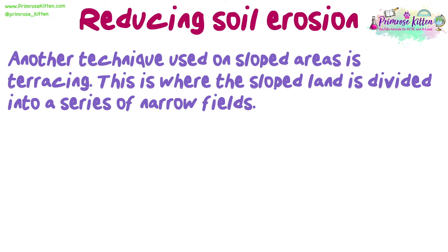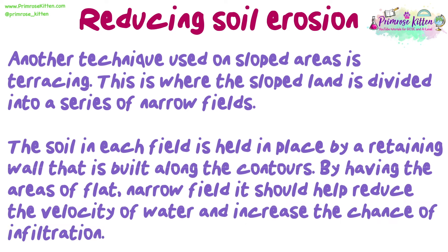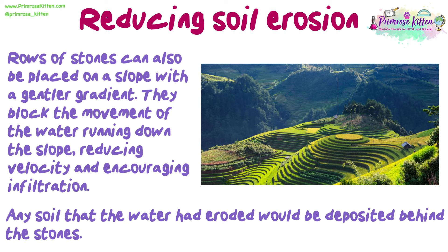Another technique used on sloped areas is terracing, where the sloped land is divided into a series of narrow fields. The soil in each field is held in place by a retaining wall built along the contours. By having areas of flat, narrow field, it helps reduce the velocity of water and increases the chance of infiltration. Rows of stones can also be placed on a slope with a gentler gradient — they block the movement of water running down the slope, reducing velocity and encouraging infiltration, and any soil the water had eroded would be deposited behind the stones.